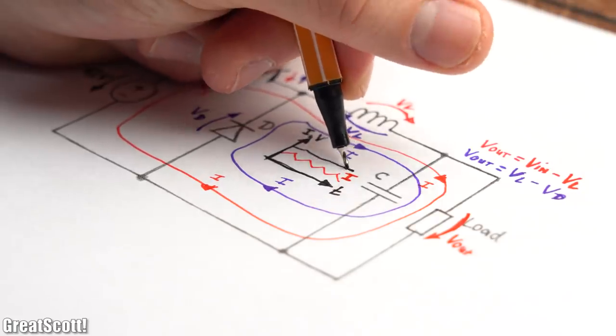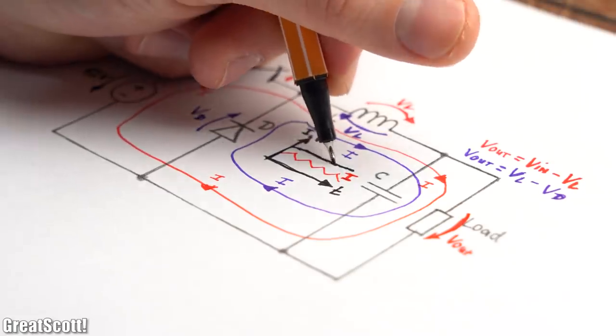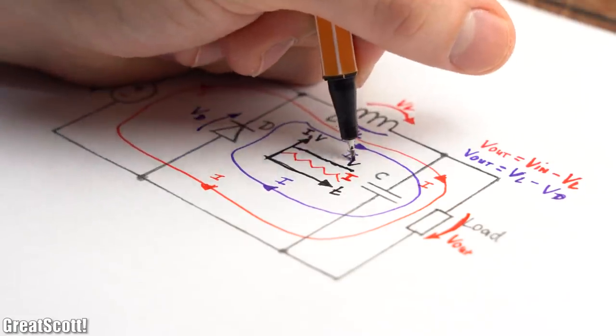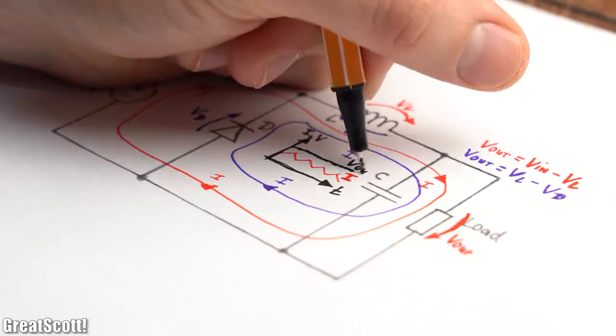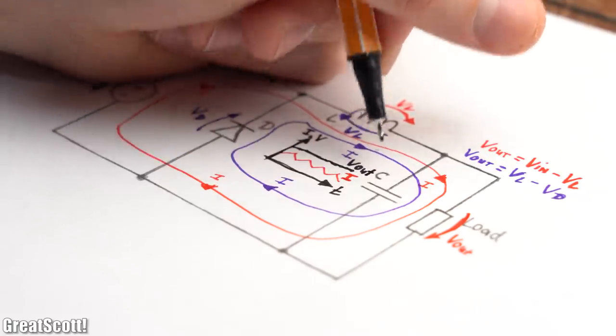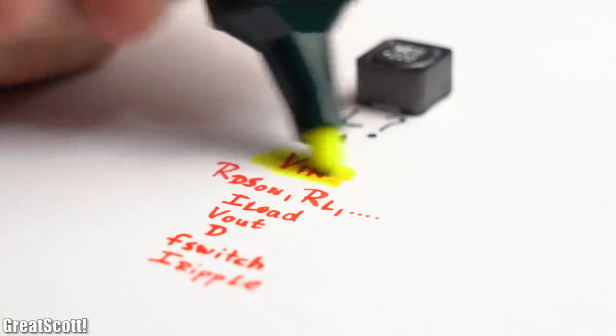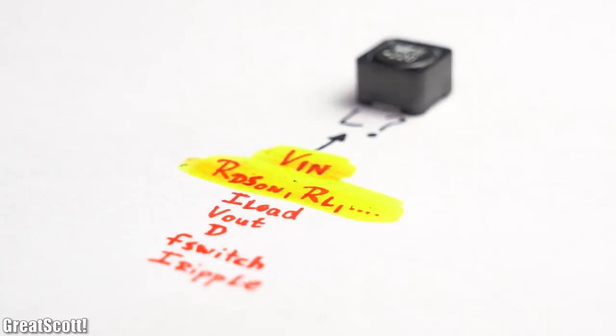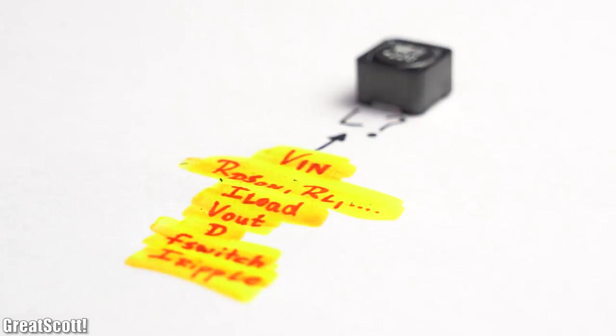I think due to this explanation of the functional principle of a buck converter, it should be clear that the inductance value depends on a whole lot of different factors like the input voltage, the occurring resistances, the load current, the output voltage, the duty cycle, the switch frequency, and even the ripple current.